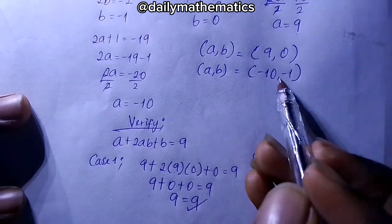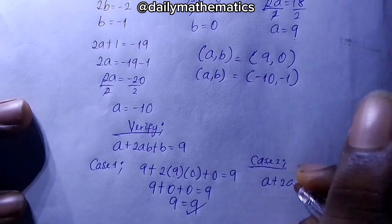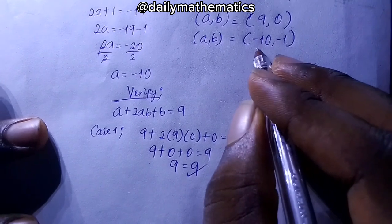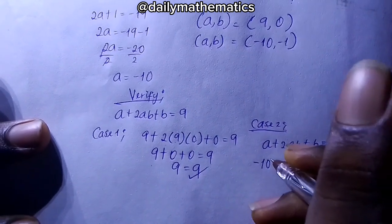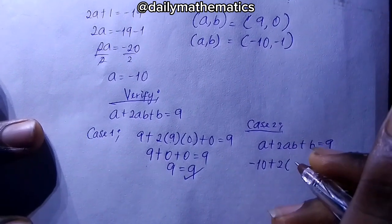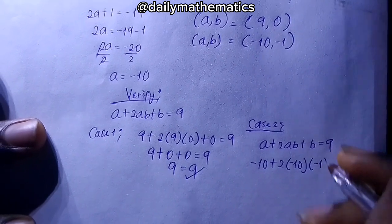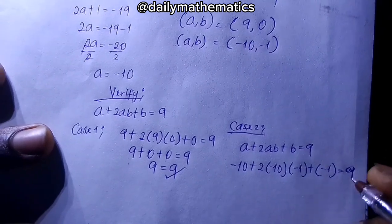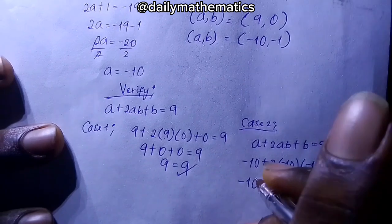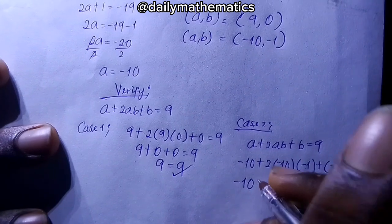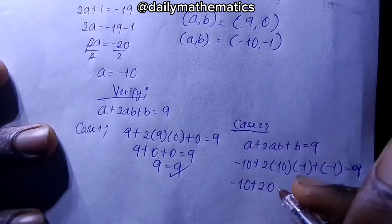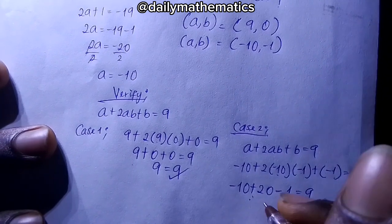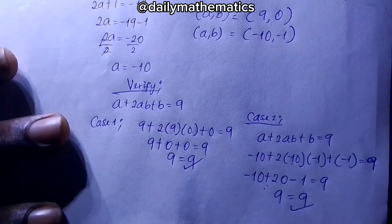For Case 2, a equals minus 10 and b equals minus 1: minus 10 plus 2 times (minus 10) times (minus 1) plus (minus 1) equals 9. That gives us minus 10 plus 20 minus 1 equals 9, and minus 10 plus 20 is 10, then 10 minus 1 equals 9. So 9 equals 9 — Case 2 is also correct.